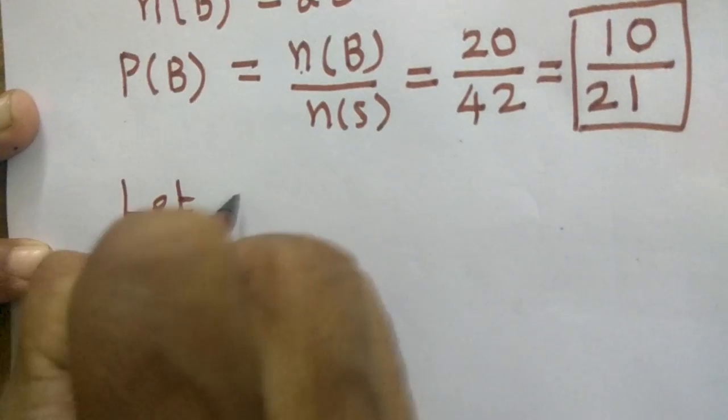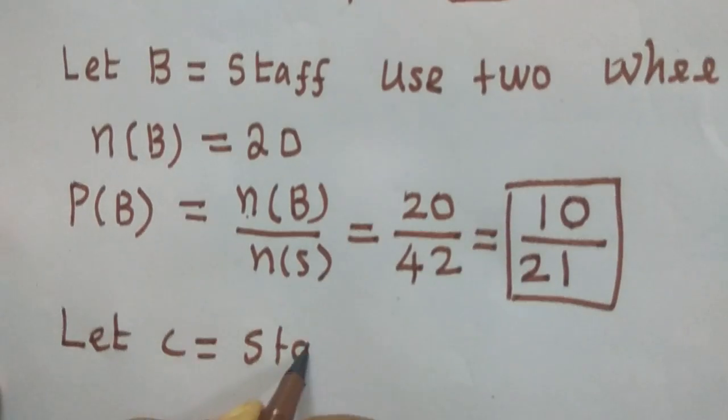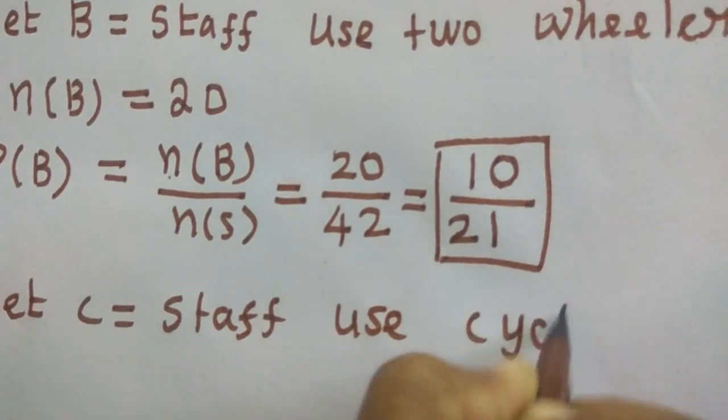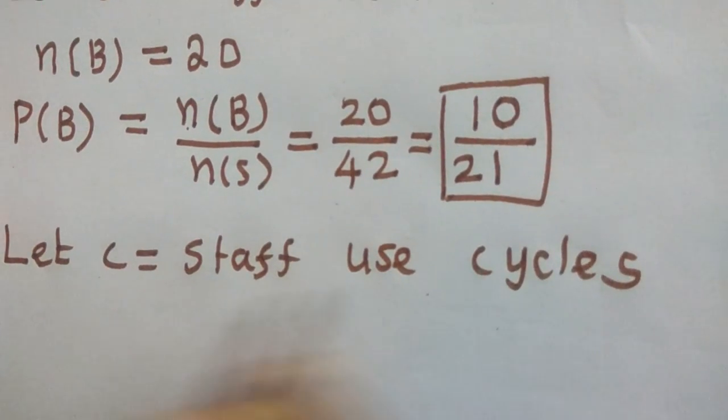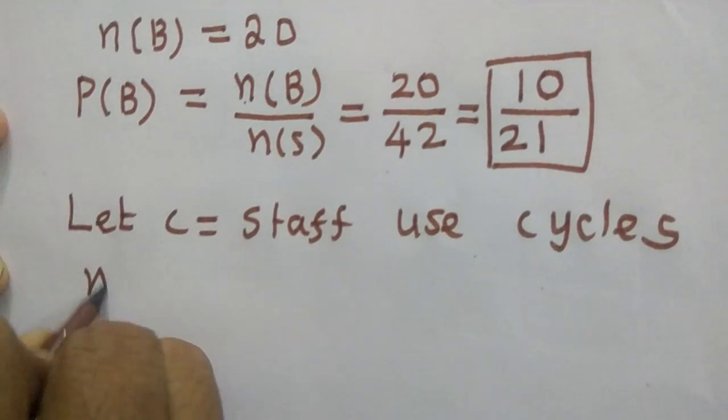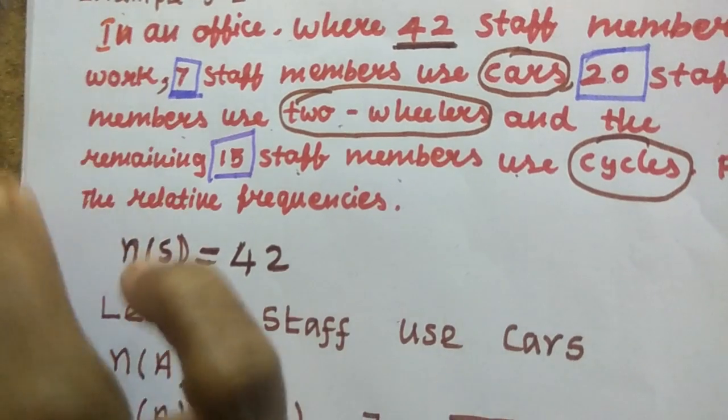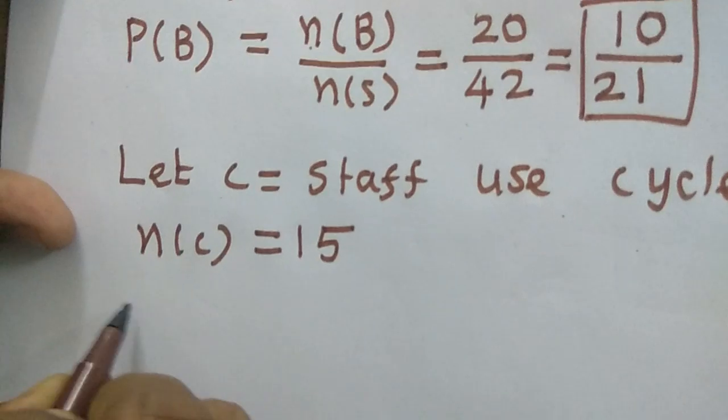Next one. Let C equal to staff use cycles. Let C be the event of getting staffs using cycles. So N of C equal to what is N of C? 15. So N of C equal to 15.